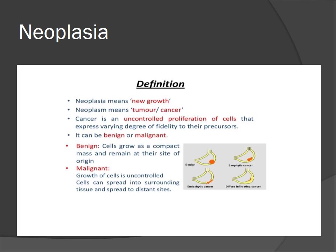Cancer is an uncontrolled proliferation of cells that expresses varying degrees of fidelity to their precursors. It can be benign or malignant. Benign means cells grow as a compact mass and remain at the site of origin, while in malignant cases, growth of cells is uncontrolled and cells can spread into surrounding tissue and spread to distant sites.